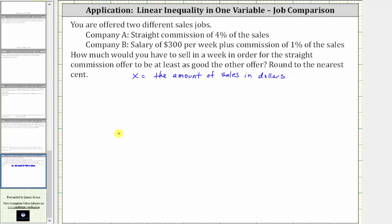To find 4% of x, with a percent of any number, we convert the percent to a decimal and multiply. 4% is equal to 0.04. 0.04 times x is equal to 0.04x. And therefore, the expression for the weekly pay for Company A would be 0.04x.